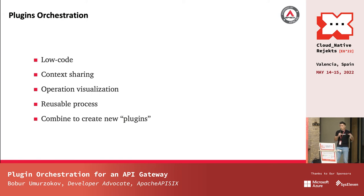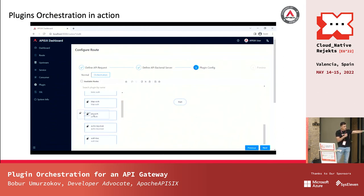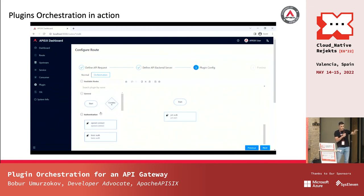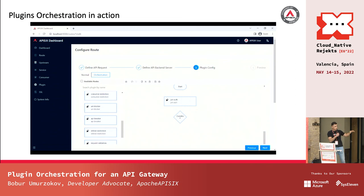However, with the low-code plugin orchestration capability of APISIX, you can easily solve the above-mentioned problems. You can orchestrate existing plugins in a drag-and-drop way from the dashboard. You can also combine different types of plugins to create new plugins. You can define conditions, and as a result it's a simple process — you have ready-made custom plugins.